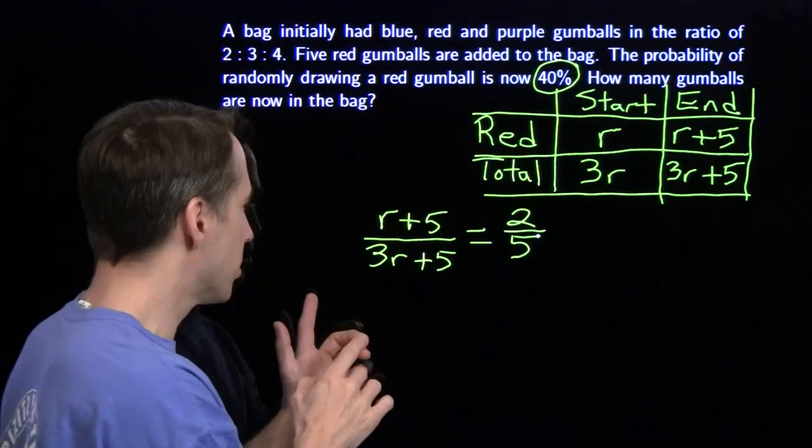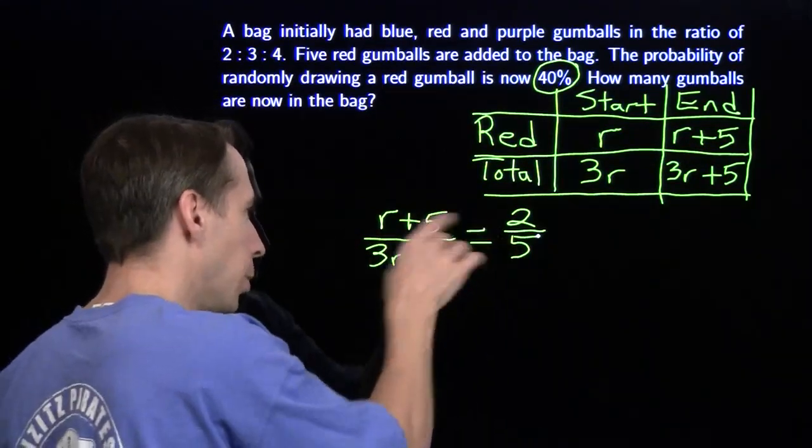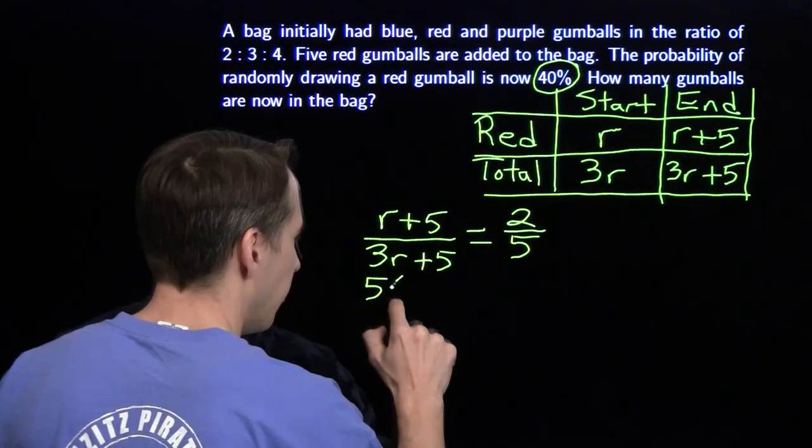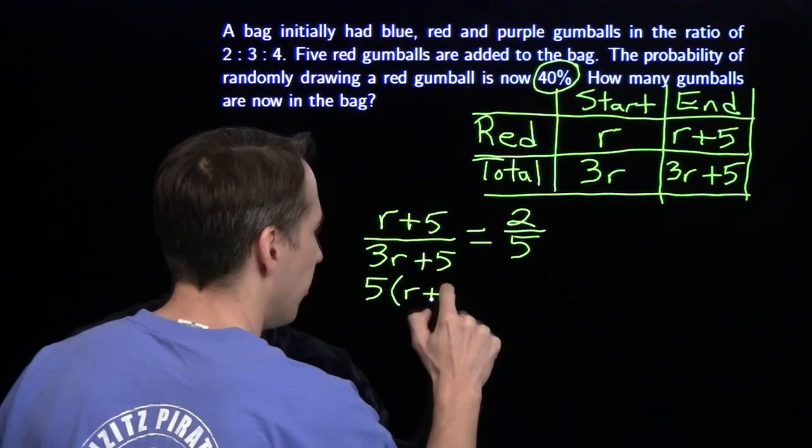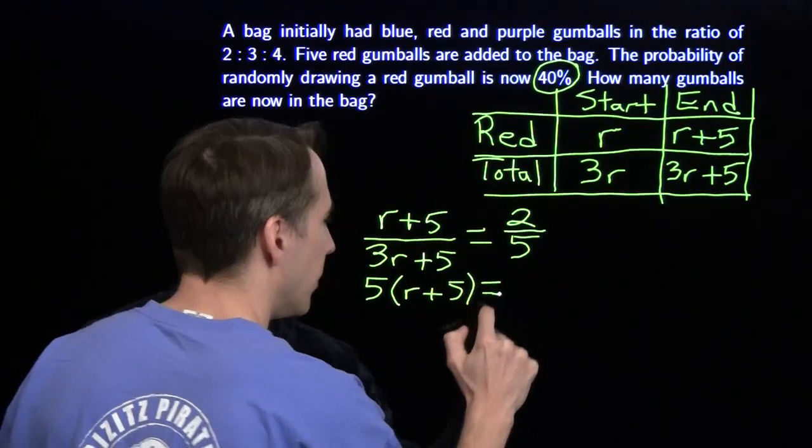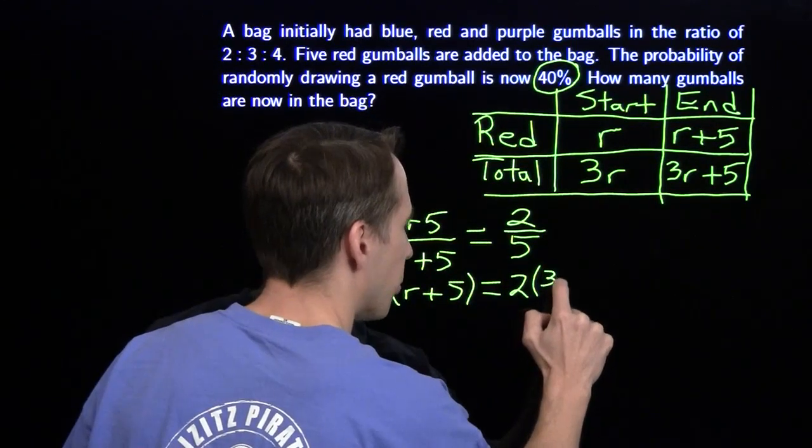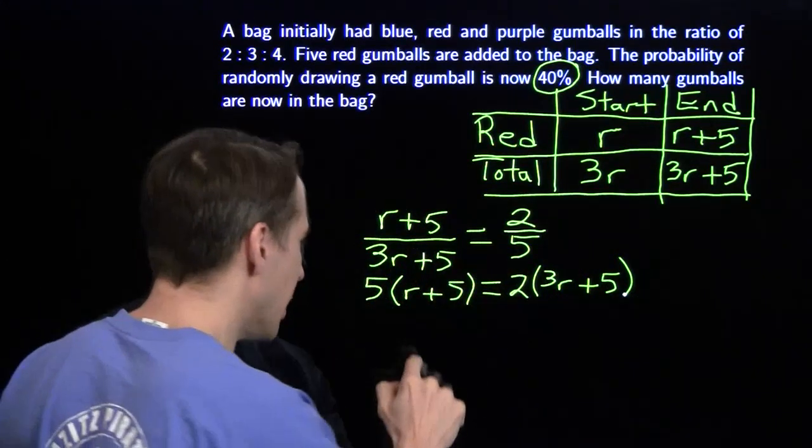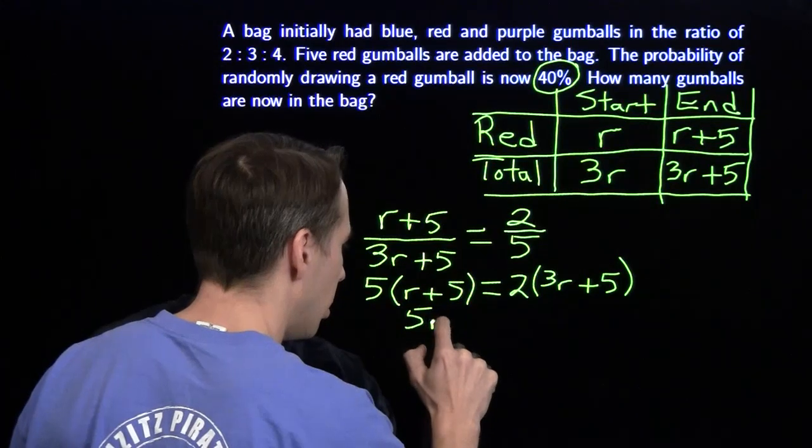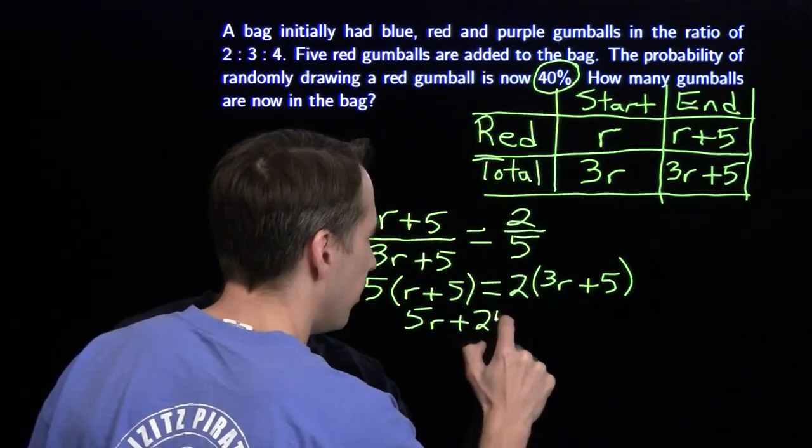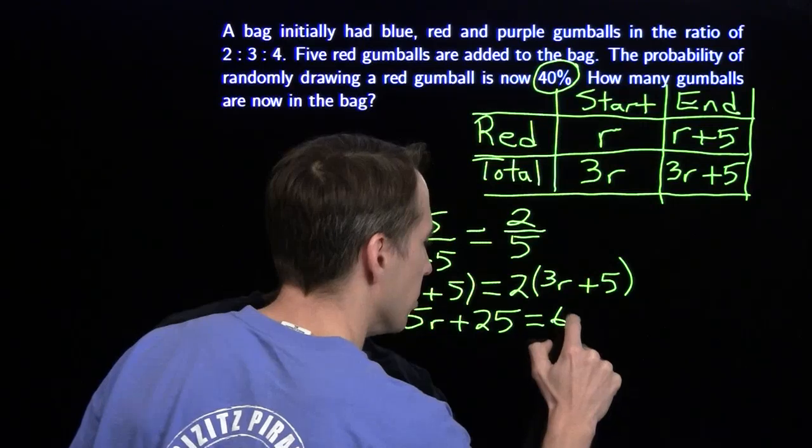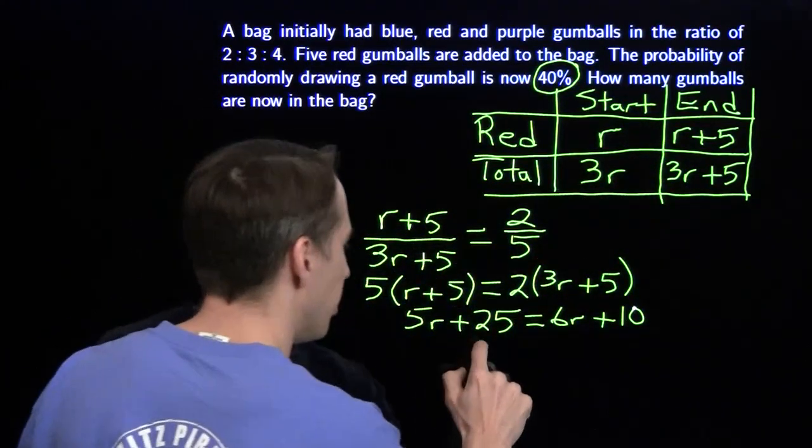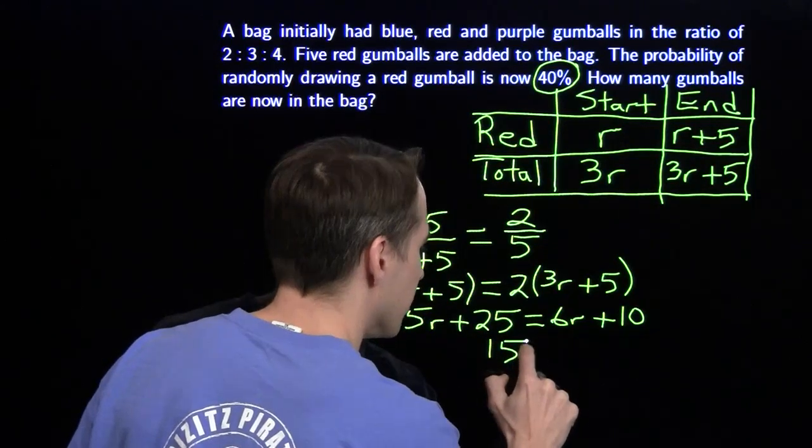This is an equation we know how to solve. First, I get rid of the fractions. We multiply both sides by 5, we multiply both sides by 3r plus 5, and we get 5 times (r + 5) equals 2 times (3r + 5). It's a nice linear equation. We expand both sides, we get 5r + 25 equals 6r + 10. Subtract 5r from both sides, subtract 10 from both sides, and we find out that r is 15.